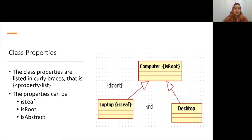Class properties are listed in curly braces. The properties can be isLeaf, isRoot, or isAbstract. isLeaf can be used to specify whether or not a class can be subtyped through a generalization structure. isRoot can be used to specify whether or not the class may be a specialization of another class. isAbstract can be used to specify whether or not the class will be abstract.